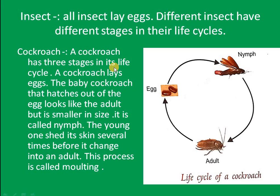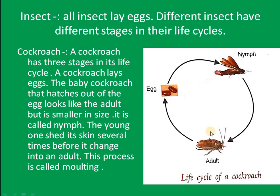Cockroach. A cockroach has three stages in its life cycle. The baby cockroach that hatches out of the egg looks like an adult but is smaller in size. It is called a nymph. The young one sheds its skin several times before it changes into an adult. This process is called molting.